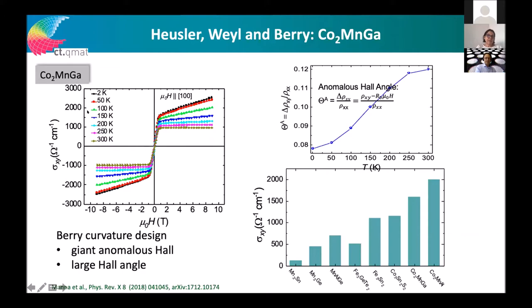Coming back to Co₂MnGa: we published the anomalous Hall conductivity — a very nice curve with a very large jump, one of the largest known. The Hall angle is quite large, up to 12%, because the charge carrier concentration in Heuslers is not so high. People have even found a 25% Hall angle in Co₂MnAl, so we expect close to 100% for the quantum effect. This is all measured at room temperature, and cobalt Heuslers show one of the largest anomalous Hall effects among topological materials.